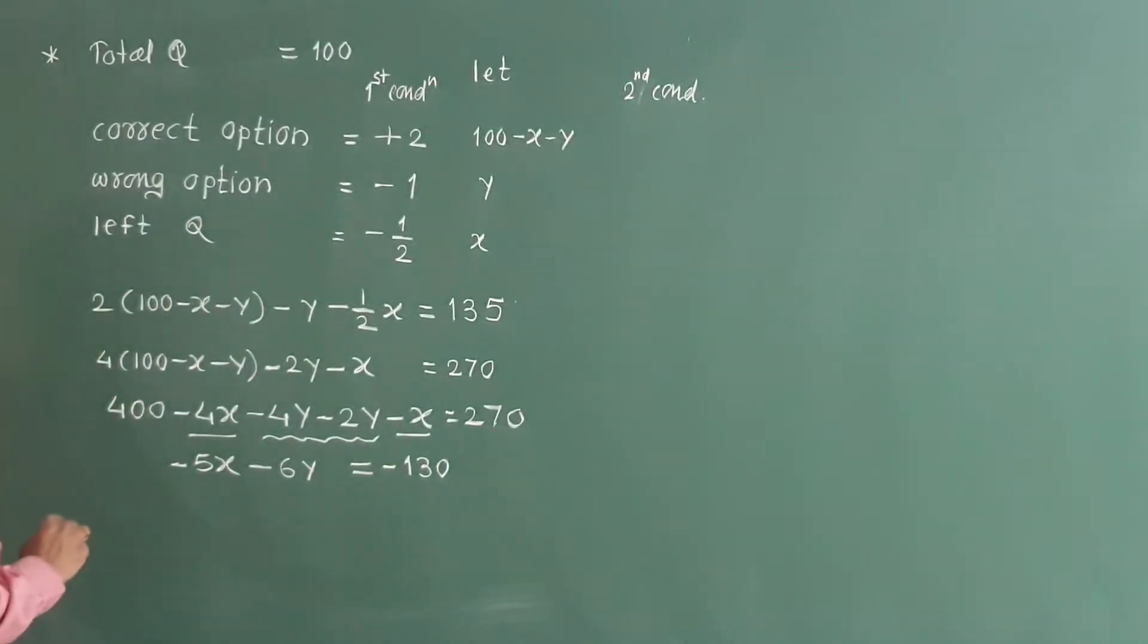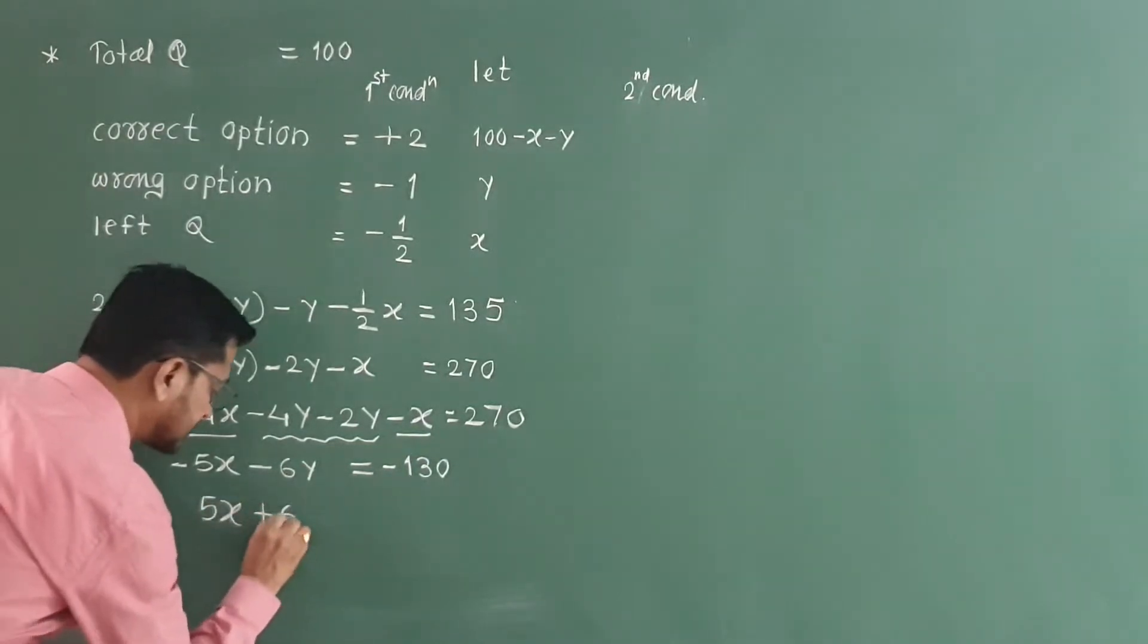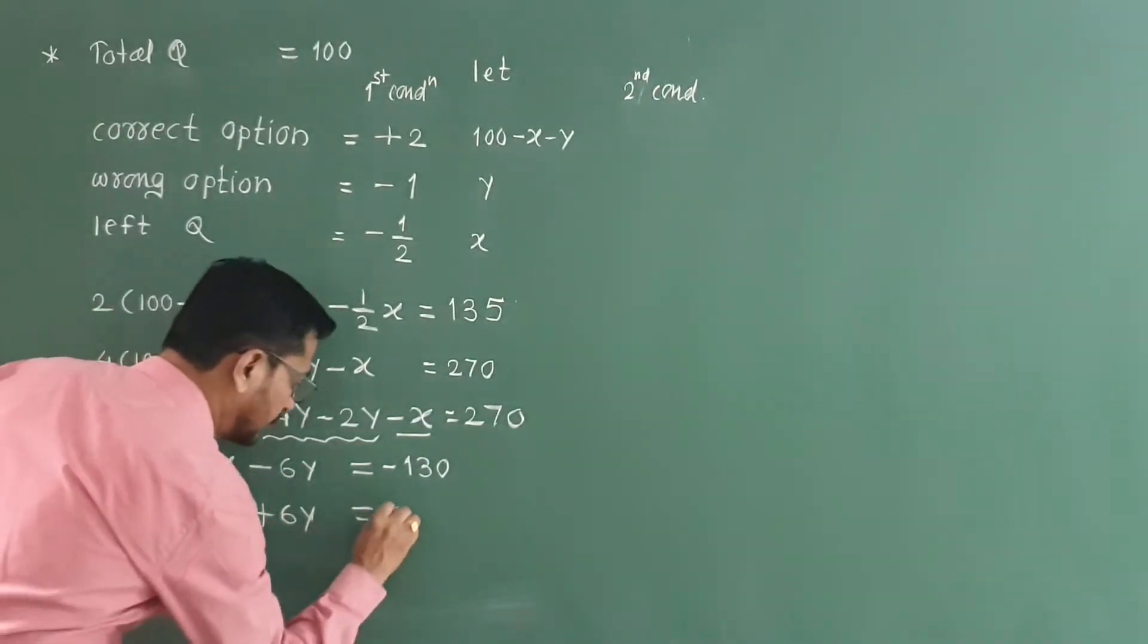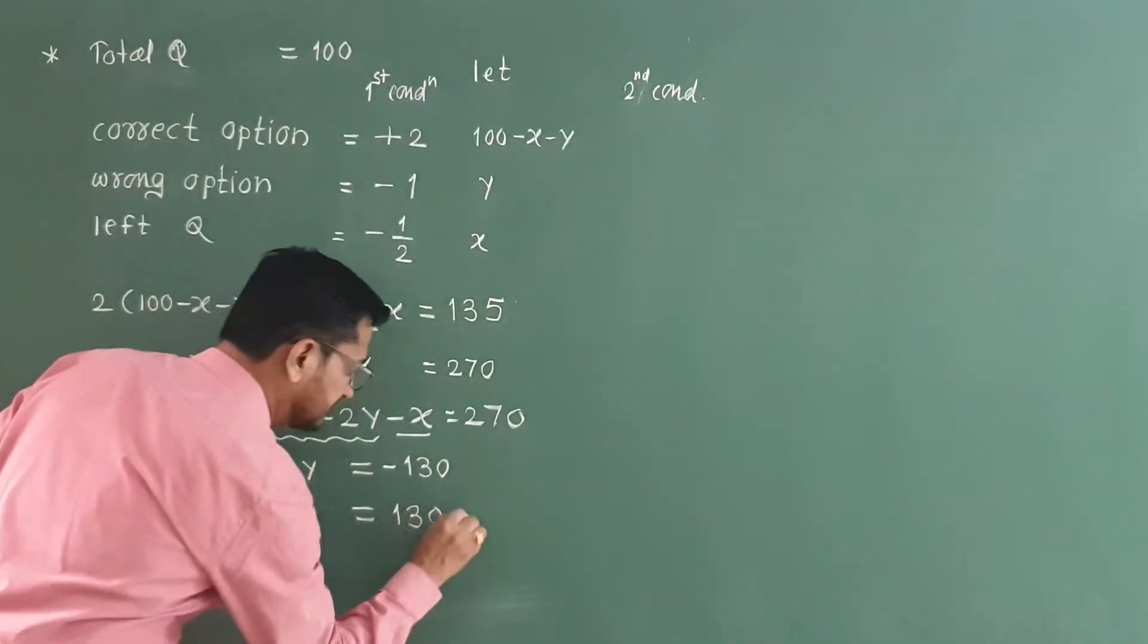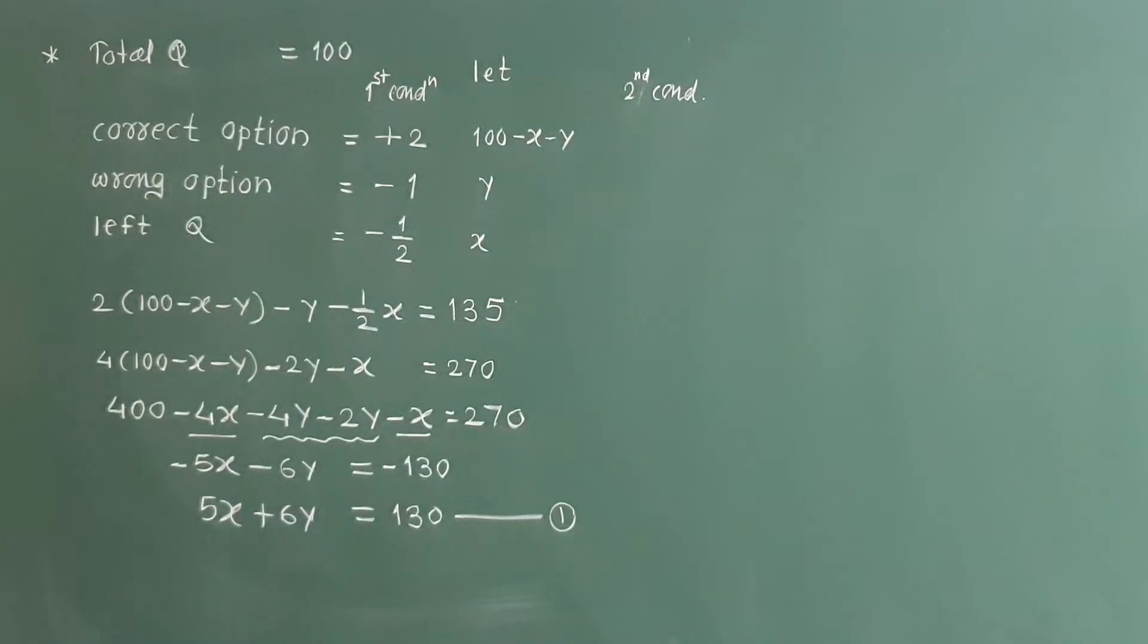Minus 4y minus 2y is minus 6y is equal to 270 minus 400, minus 130. So we get 5x plus 6y is equal to 130. Equation number 1.